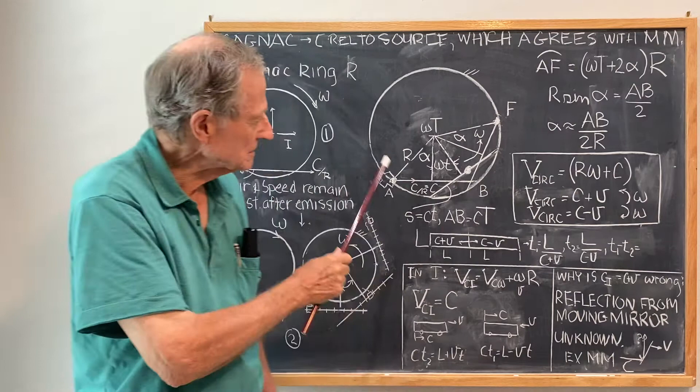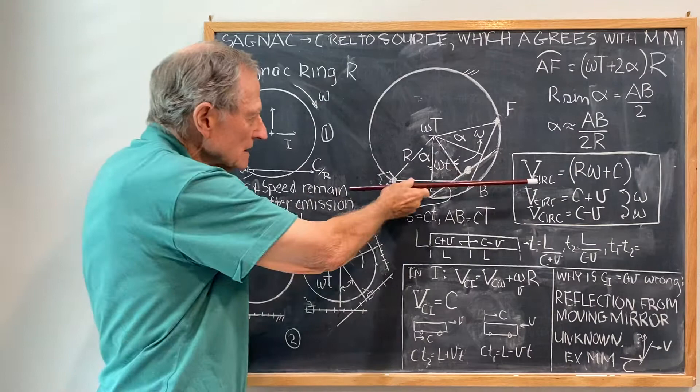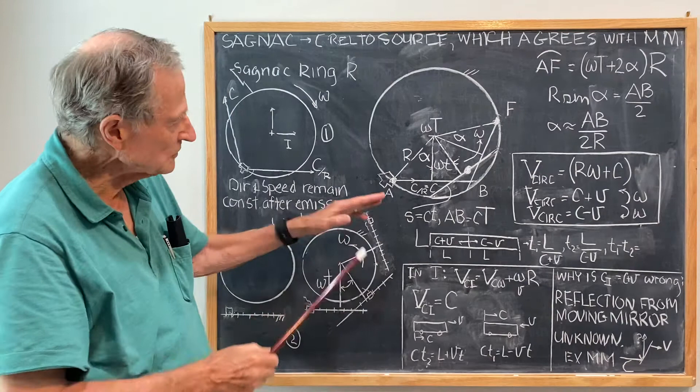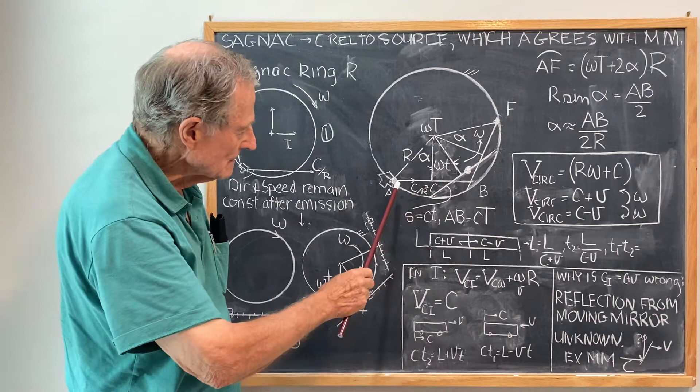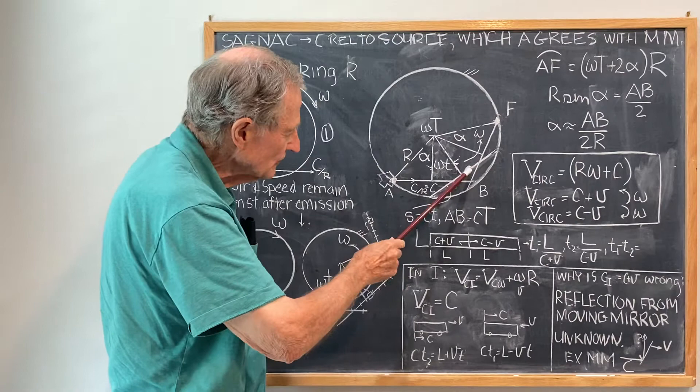So that's why the solution to the Sagnac calculation is a clear picture. And that's the clear picture. The track is rotating from the point of view of the ring, with respect to the ring. The track is rotating and the photon is proceeding along the track at a speed C. So it's emitted here at a speed C in that direction. After a time T, the track has rotated a distance omega T and the photon has moved along the track a distance S equals CT.